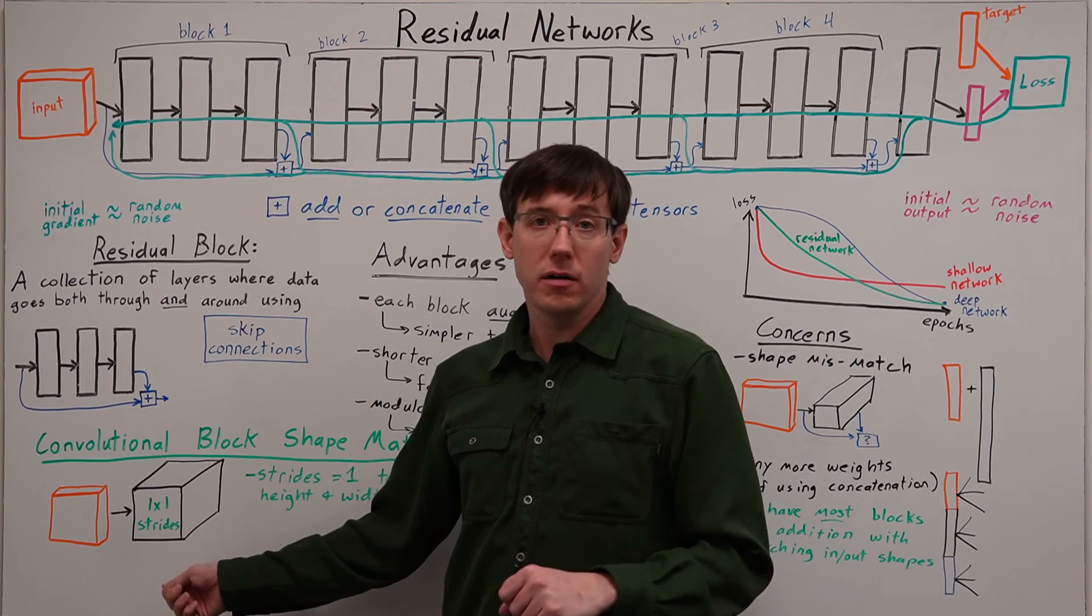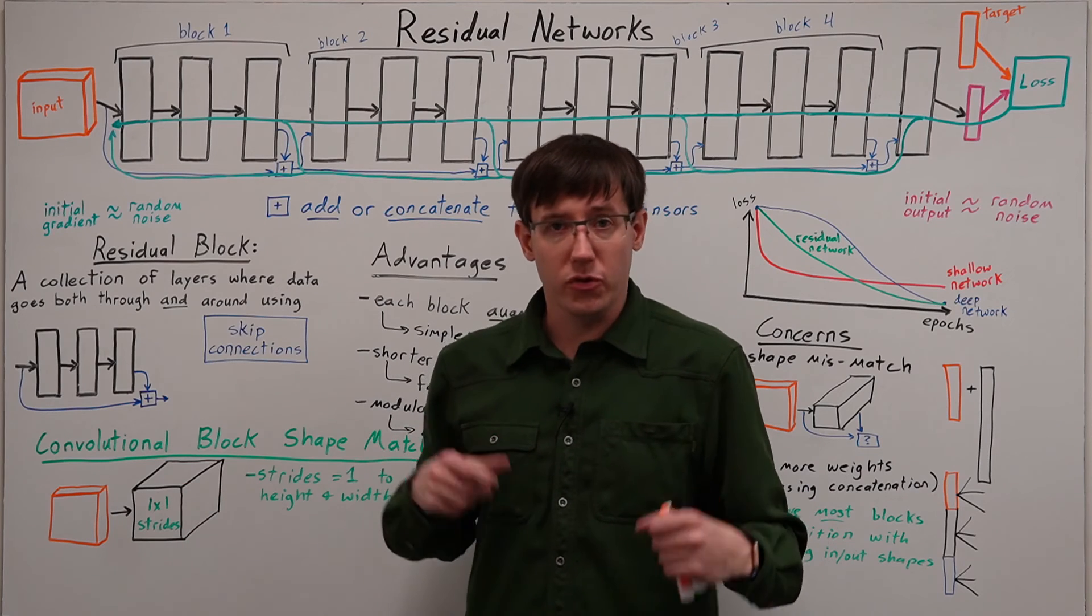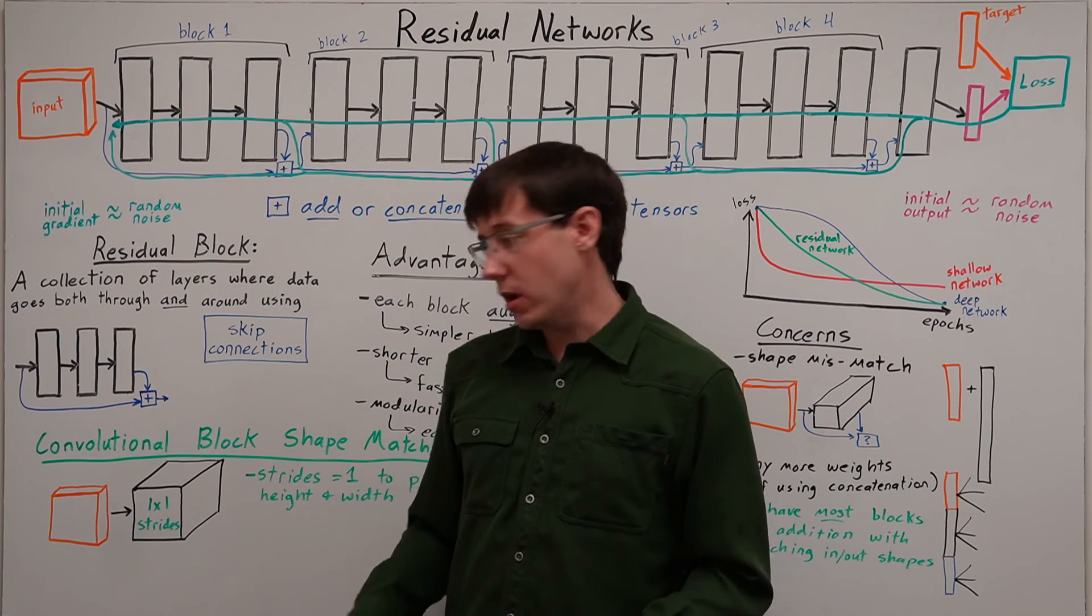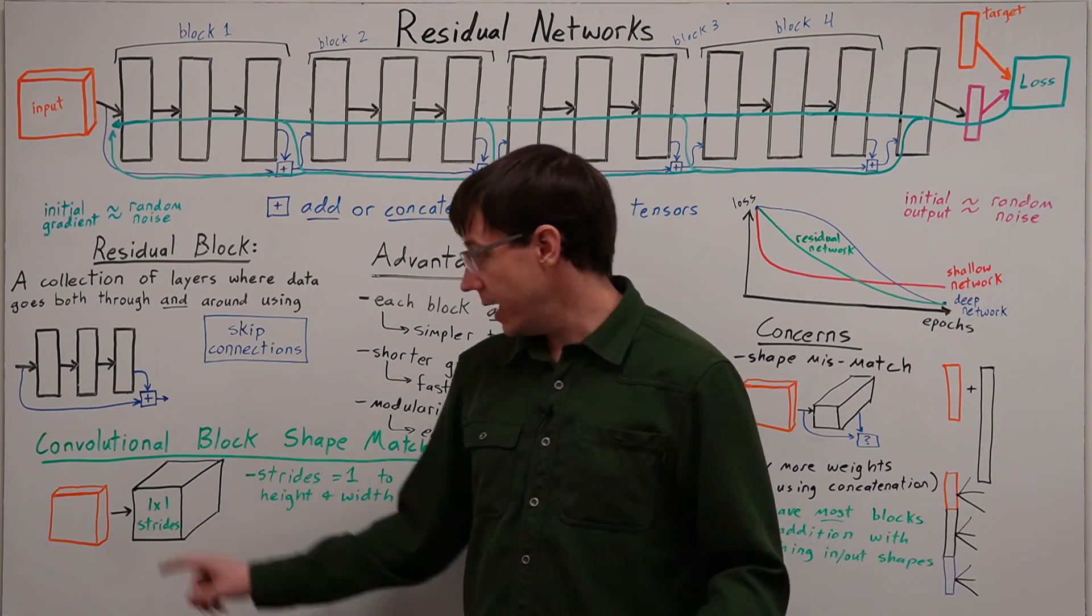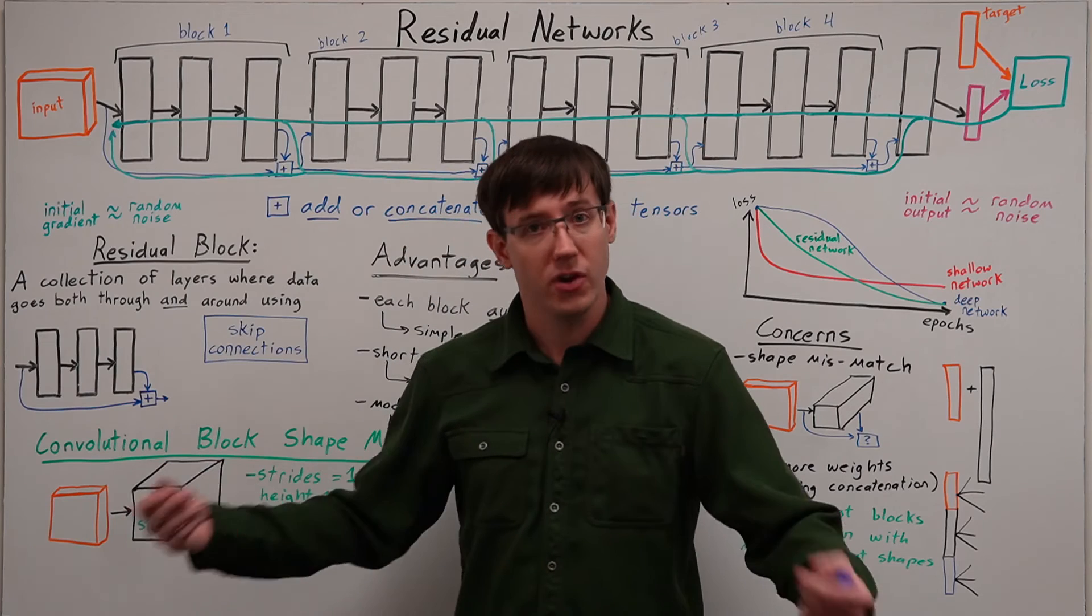The first thing we can do to simplify convolutional blocks is use 1x1 strides and appropriate padding to ensure that the height and width of the image is preserved. And that way we know that when we add the input and output tensors for a block, at least the height and width dimensions will match up.